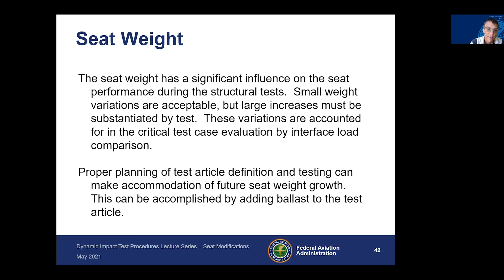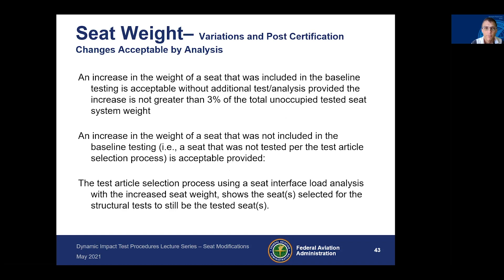Proper planning of test article definitions and testing can accommodate future seat weight growth, accomplished by adding ballast to the test article. For example, if you're expecting additional components or changes that may increase weight, you can ballast your initial seat to a higher weight level in your baseline testing. If you've included that higher weight, when you achieve that seat weight growth, you've already shown that the seat components can withstand those higher loads.